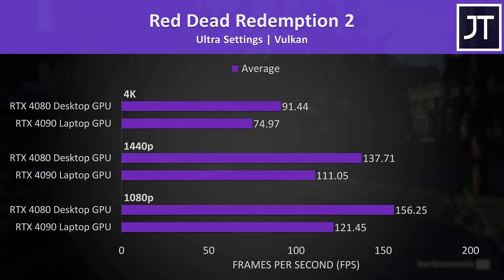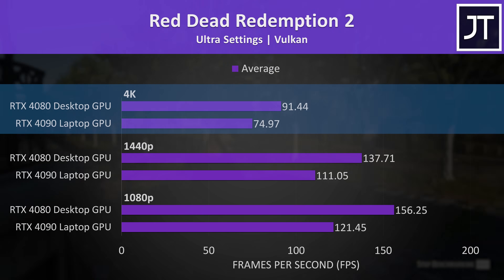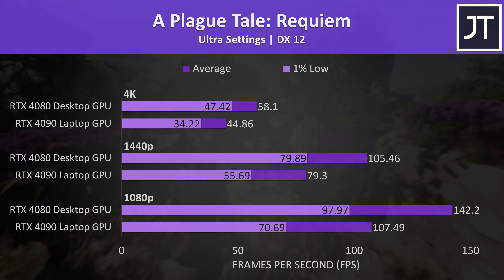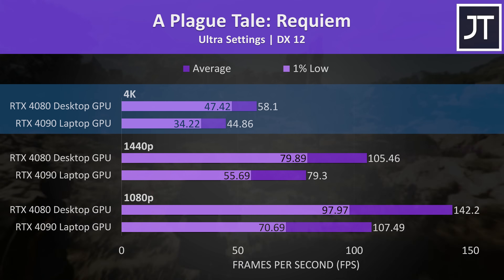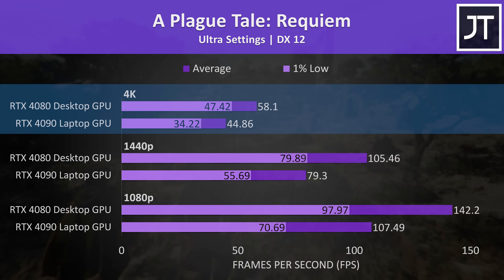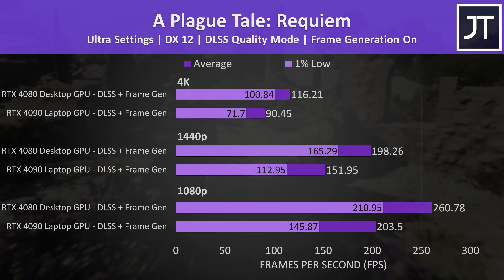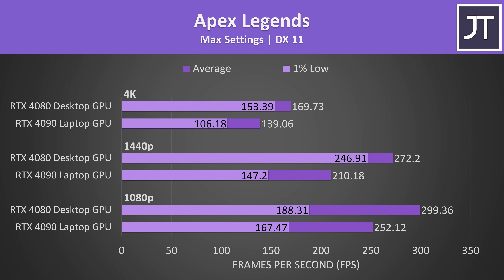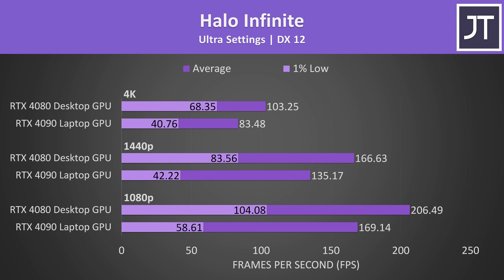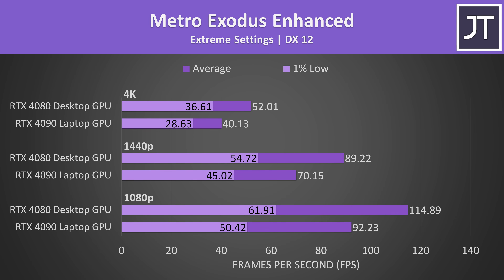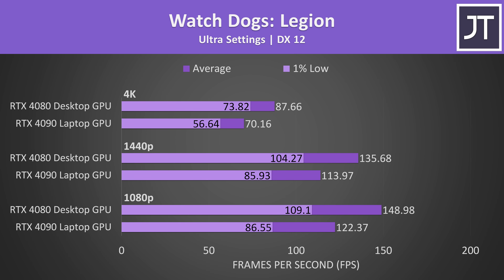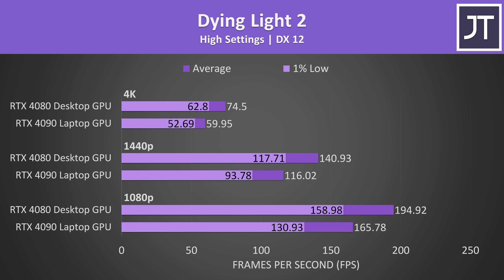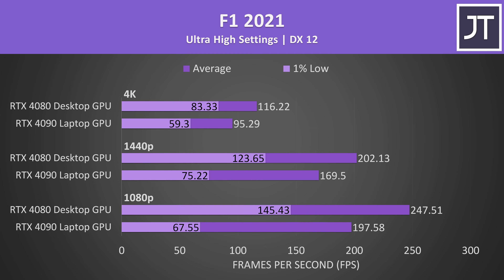Red Dead Redemption 2 was tested with the game's benchmark. The 4090 laptop GPU was still well above 60 FPS at 4K max settings without upscaling, and the desktop card was only 22% faster. A Plague Tale Requiem had some of the biggest differences at 4K, with the desktop 30% faster, and it felt a bit stuttery on the laptop — turning on DLSS and frame generation made it play much nicer. The desktop 4080 was always beating the laptop 4090. Instead of talking through all remaining games, I'll skip through the rest of the results on screen — feel free to pause if you want a closer look. Testing a wide selection of games gives us an accurate picture of average performance differences for the fairest possible conclusion.